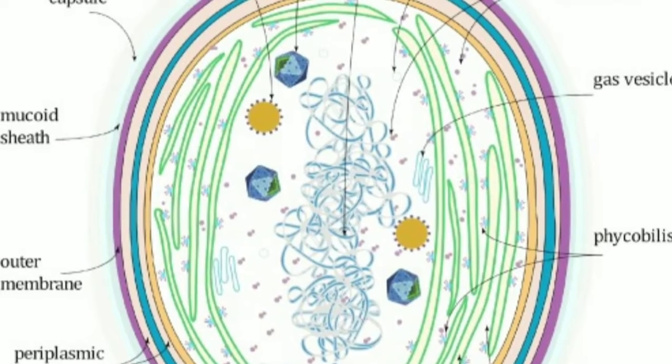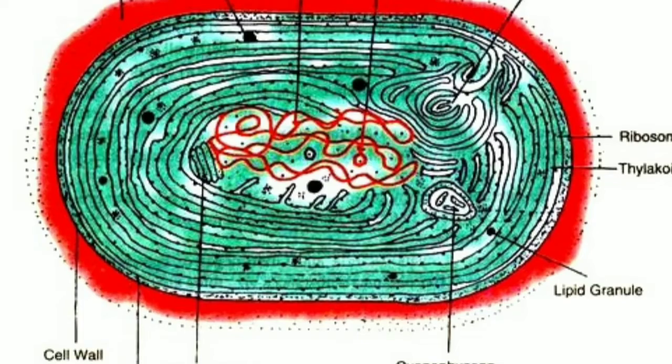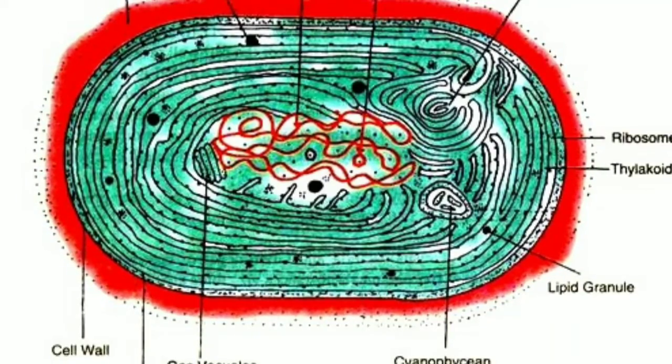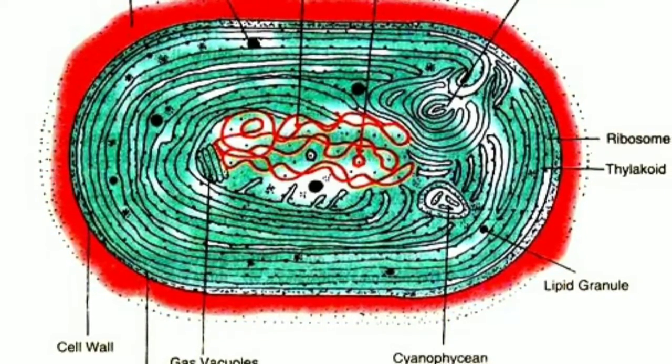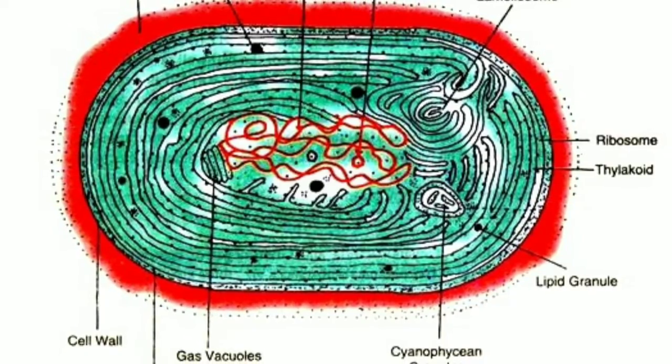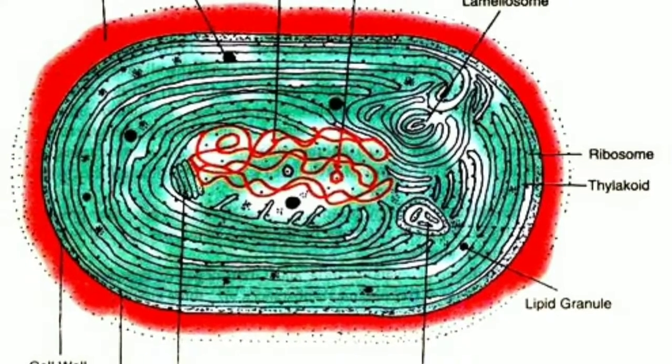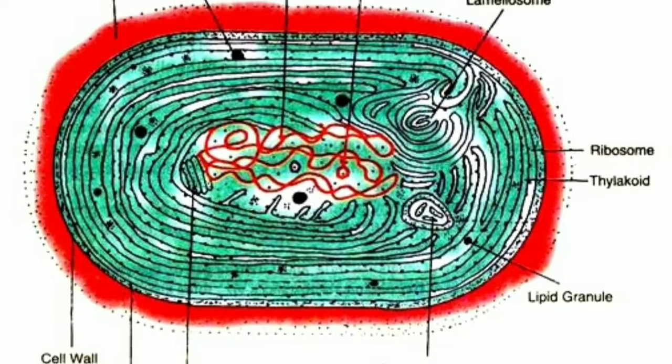Now come to the next point which is cell wall. Cell wall is thin, firm and similar to gram-negative bacteria. It is divided into four layers designated as L1, L2, L3, L4.